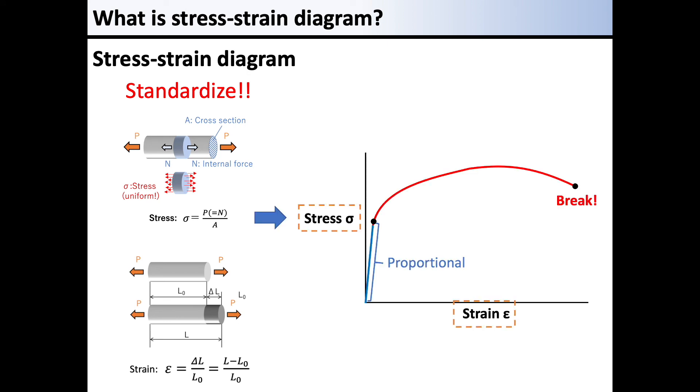The curve that describes the relationship between stress and strain is identical to the material. A curve that describes the relationship between stress and strain represents the material-specific properties.